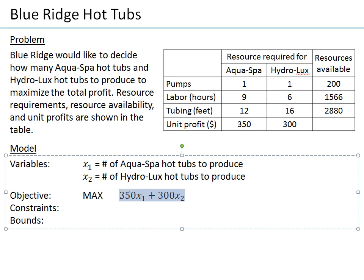It's a good idea to write in parentheses the meaning of this function. Right now we know this is total profit that we're maximizing, but later on you might ask yourself what is this function and what is the meaning of 350. So it's a good idea to write a comment indicating this is total profit, measured in dollars.